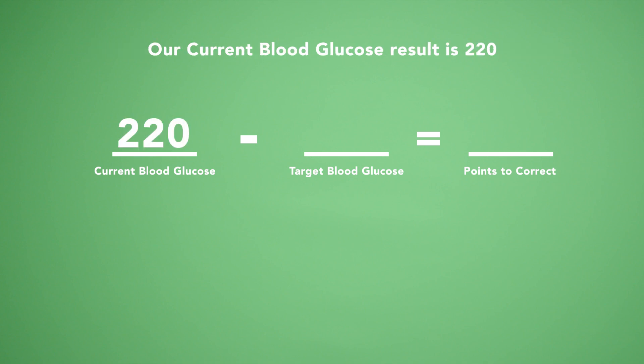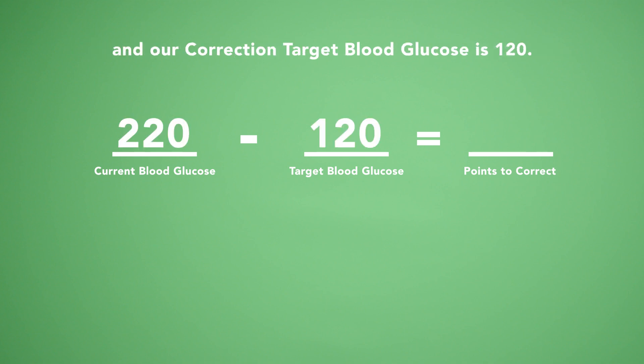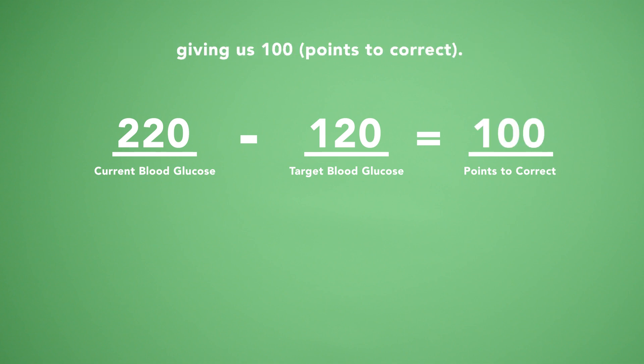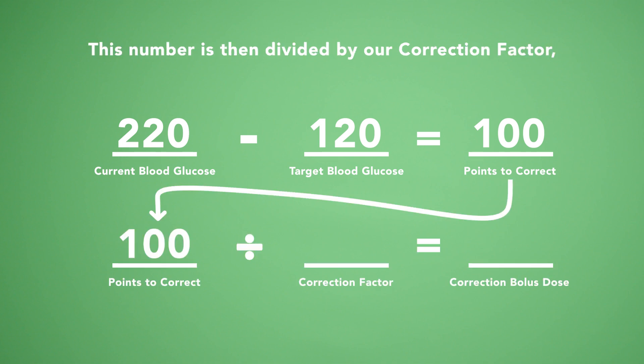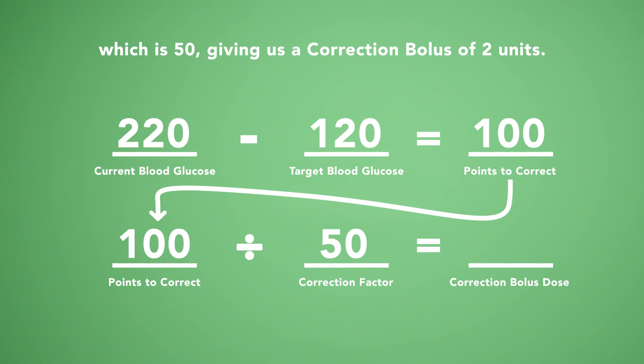Our current blood glucose result is 220 and our correction target blood glucose is 120. We then subtract 120 from 220, giving us 100 points to correct. This number is then divided by our correction factor, which is 50, giving us a correction bolus of 2 units.